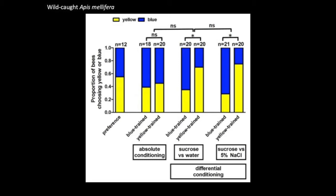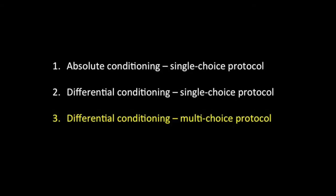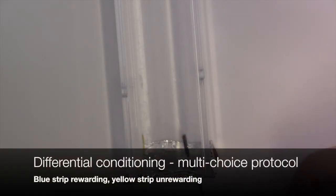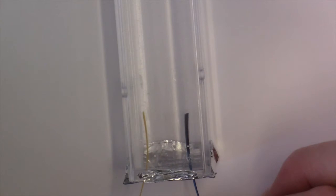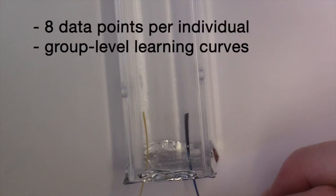We then went on to come up with a procedure where we could get multiple measures for each individual. We called this the multi-choice protocol because in each trial the bee is given a choice between the two stimuli. On every trial the bee still experiences both of them, but the bee decides which order it will sample them. For this protocol we gave each bee seven trials, so in each trial the bee could make a choice, followed by an unrewarded test phase as before. This meant we got a lot more data per individual and could look at group-level learning performance.